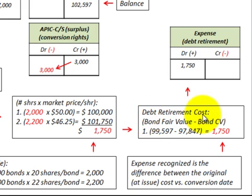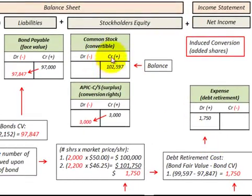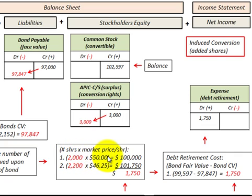Technically, the debt retirement cost is the bond's fair value minus its carrying value at the time of conversion, which should equal the same $1,750. The common stock issued is the balancing amount between the debits and the credit balance. When making this conversion, we go back and calculate what we originally offered bondholders at the original market price, then use the change in share values plus the market price at the conversion date to calculate our expense, which we then recognize on the income statement.